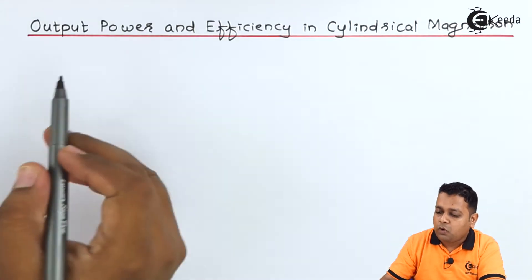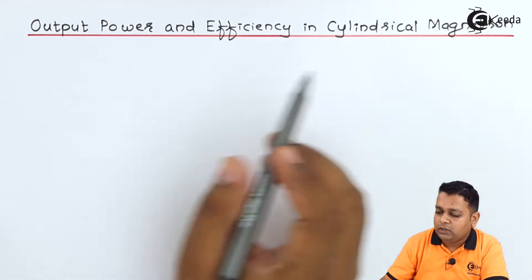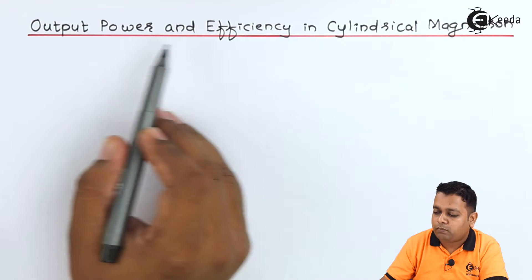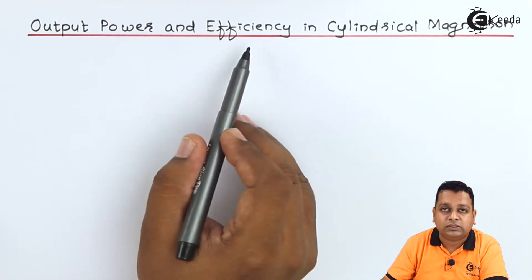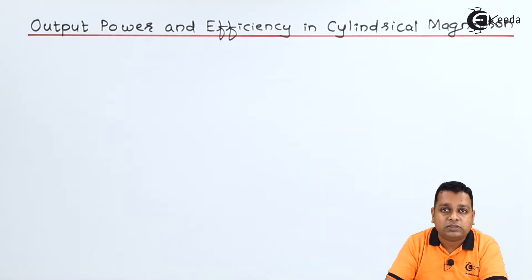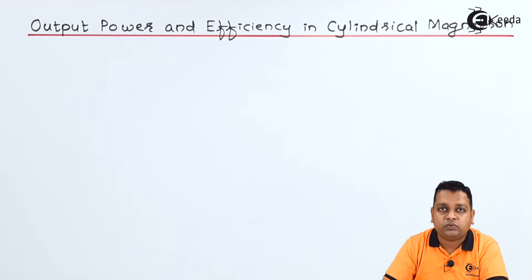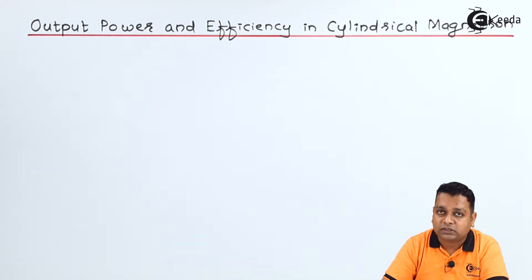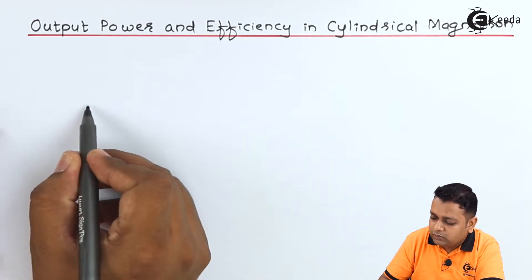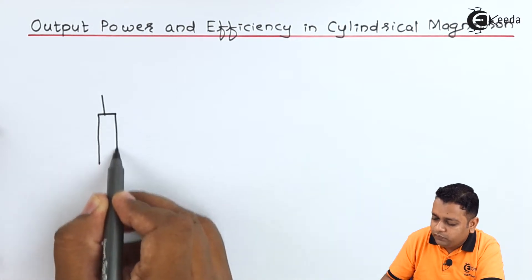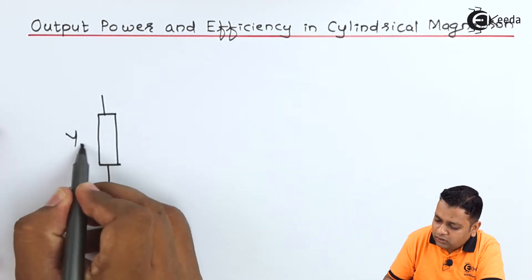We start with our topic: output power and efficiency in the cylindrical magnetron. These two performance parameters depend on the resonance circuit inside the device structure and the DC power supplied to it. The anode body contains N number of cavities. For one resonant circuitry, the equivalent circuit can be drawn in terms of conductance, inductance, and capacitance values. On the left-hand side we show the admittance, denoted Y_e.